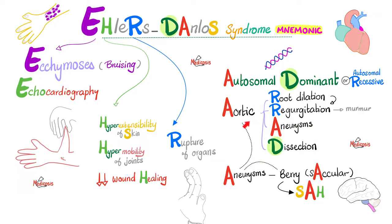The second A stands for aneurysms in the aorta or in the brain — berry or saccular aneurysms. If this ruptures, it gives me subarachnoid hemorrhage: the worst headache of my life, the thunderbolt headache. It's called Ehlers-Danlos — look at the two S's: here is skin hyperextensibility, and here is subarachnoid hemorrhage.